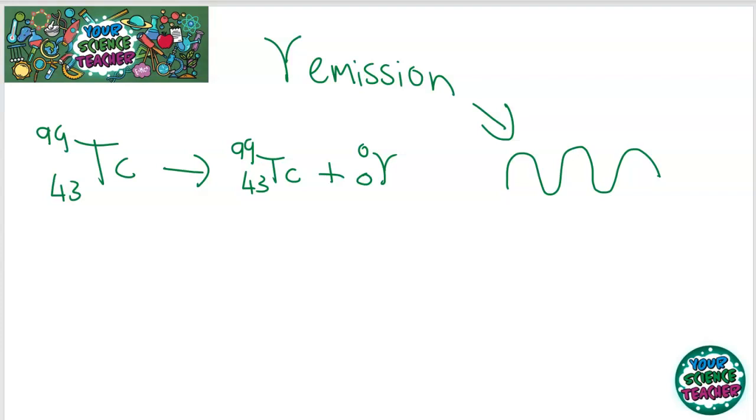So writing gamma equations are really easy. Gamma radiation is usually a byproduct of alpha emission and beta emission.